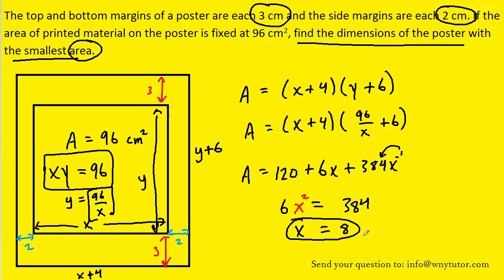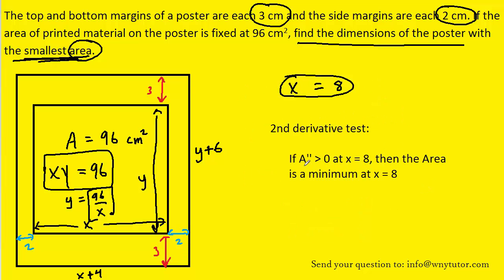Now, technically we have to show that this value of x produces the smallest area. In other words, this value of x will minimize the area. And to do that, we can use the second derivative test. The second derivative test tells us that if the second derivative is positive, or greater than 0, at our particular x value, then the area will be a minimum.